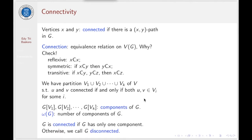The subgraph induced by V1, V2, up to VK, we call components of G. Omega G is the number of components. We say G is connected if G has only one component, otherwise we call graph G disconnected.